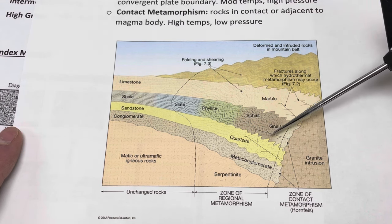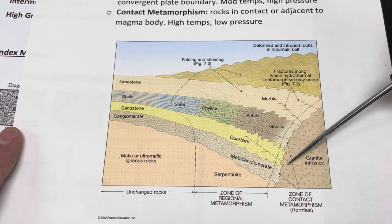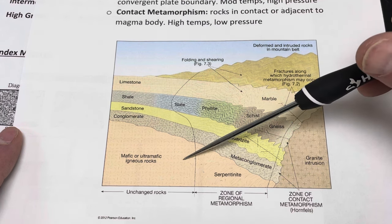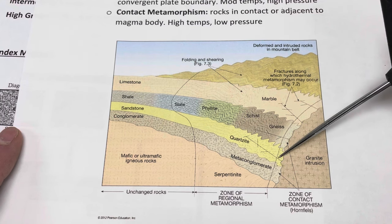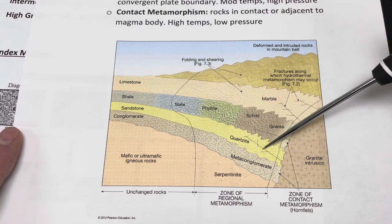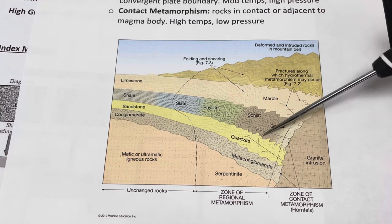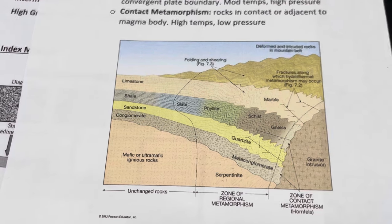This would be a good example of contact metamorphism, where the magma body is in contact with the pre-existing rocks, and the heat from that magma body, along with circulating fluids and maybe some other processes, will change the rocks over time into metamorphic rocks.